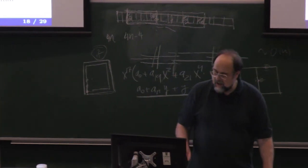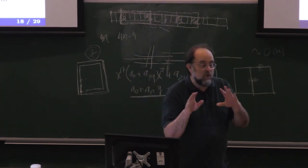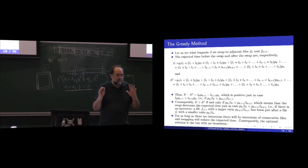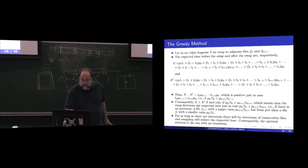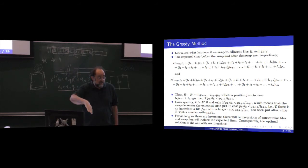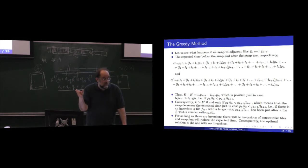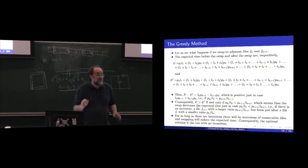Let's start. Just quickly back to this problem: you should not confuse the complexity of the proof with the complexity of the algorithm. The algorithm simply says sort them in decreasing order of probability over length, and this is the order in which you put files. The complexity is O(n log n) because this is the time needed to sort. But notice the complexity of the proof, which is irrelevant for the complexity of the algorithm.